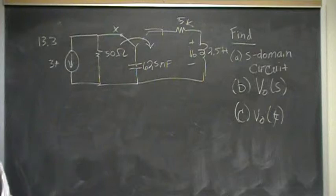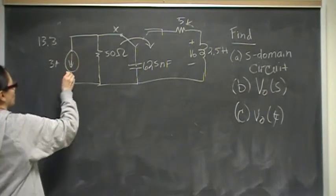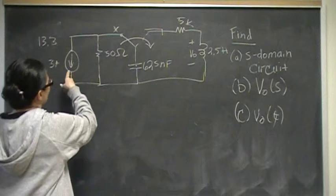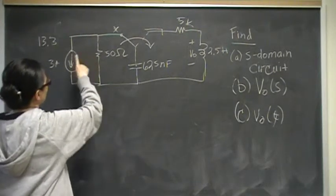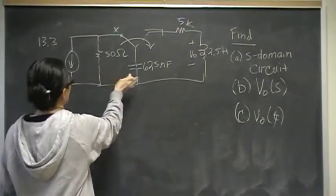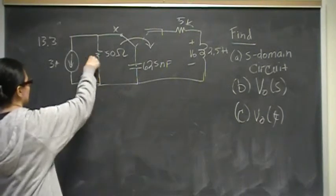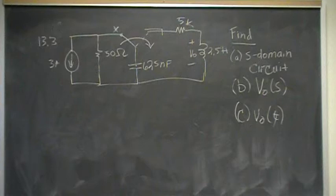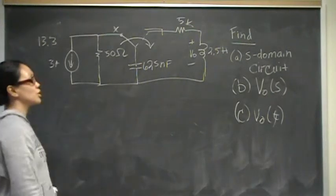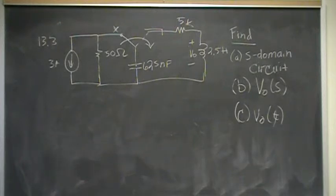We have a switch. That means we have to consider initial conditions. A mistake would be to say that this 3 amp is going to just go in a loop here, or the capacitor is an open. A mistake in logic would be to say the capacitor is an open in DC, and therefore this 3 amp will go in a loop, and there will be no current across here, or no voltage across there. That would be a mistake.